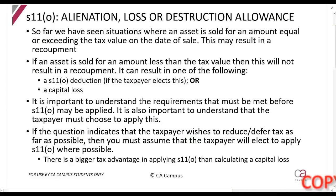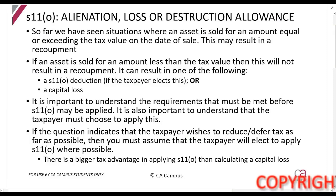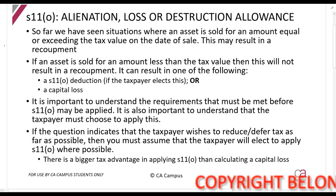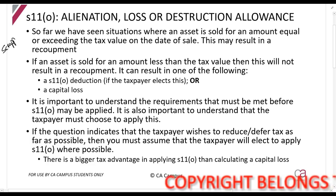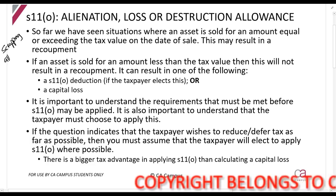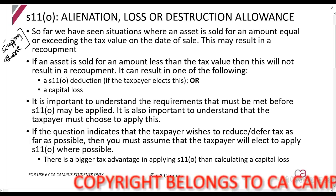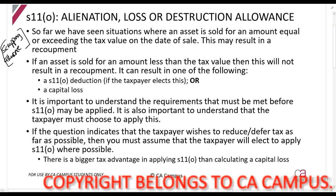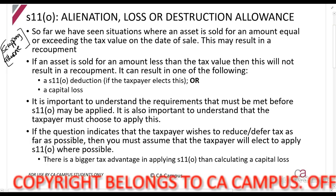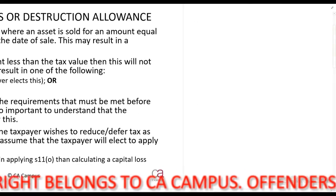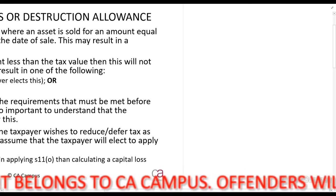We are now going to be looking at Section 11(o), the alienation loss or destruction allowance. This used to be called a scrapping allowance - it's not really the term used anymore, though occasionally you'll still hear someone talk about a scrapping allowance. In simple terms, this is like a negative recoupment.